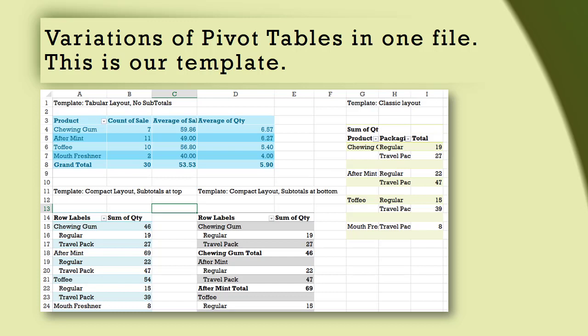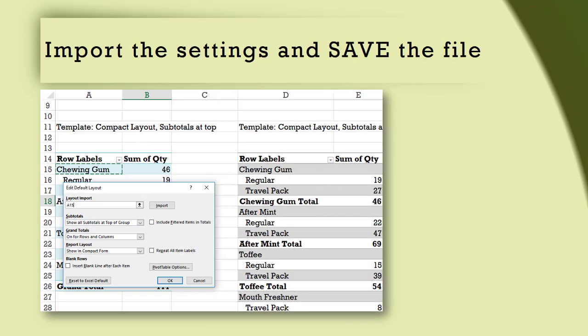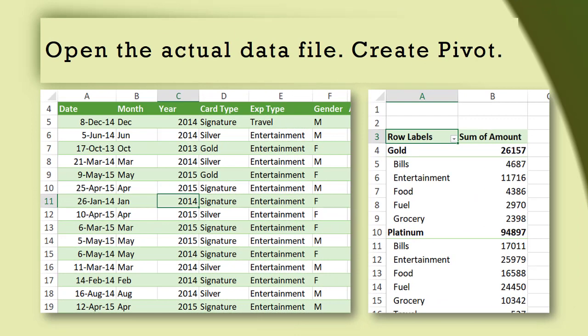Now you know which type of pivot table you want to generate with your real data. So before going to that real data file, go to the desired layout in the template file, click anywhere inside it and choose Import, click OK and save. Now go to the actual data file and create a pivot which will follow this default.